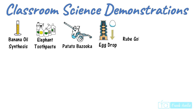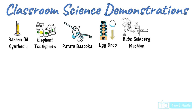A Rube Goldberg machine is a complicated contraption to solve a simple problem. A marble hits a set of dominoes which falls onto a spoon which flings to a tree to feed the cat — or something like that.